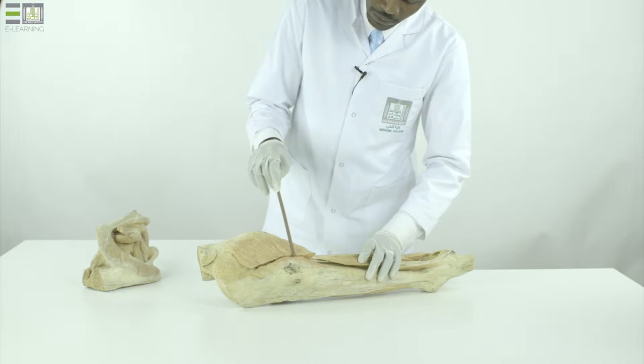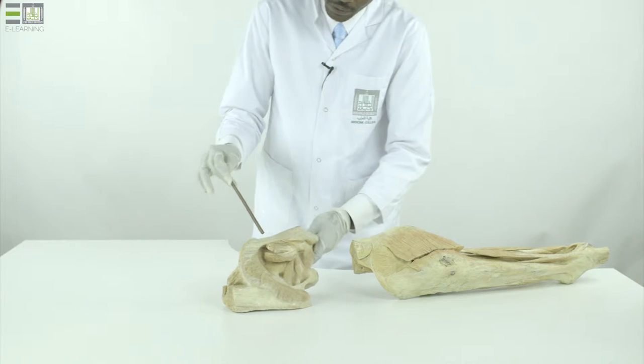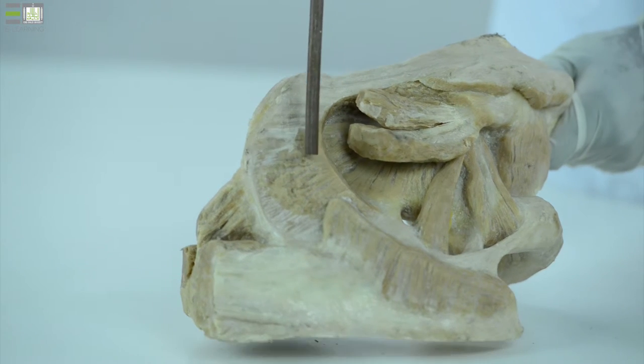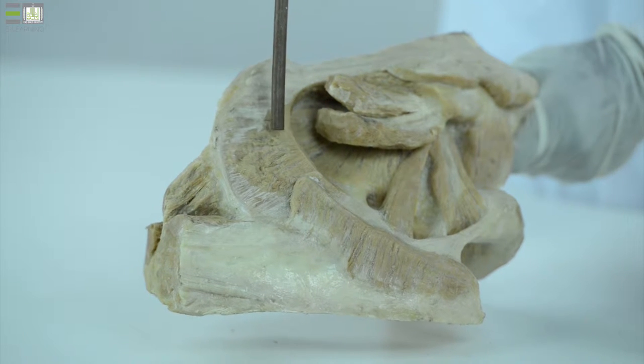If we cut this muscle, we can look at the deep muscles within the gluteal region, which is the gluteus medius, attached also to the outer surface of the hip bone, the gluteal surface.